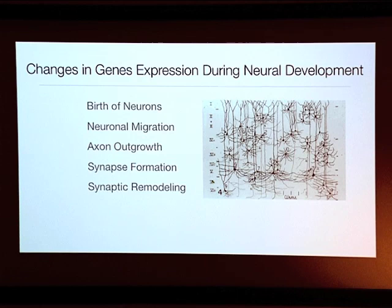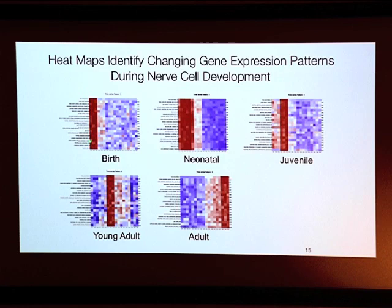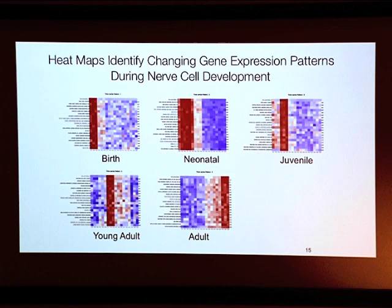I want to show you a heat map — 20,000 genes — where we can look at how all the genes are changing in an individual identified cell during development, from birth to the neonatal period, to the juvenile period, young adult, and adulthood. Genes at the highest levels are painted red. Early on during birth and the neonatal period, when we're generating cells and migration is ongoing, most genes are involved with growth, migration, and connections. Later on, other genes take hold involved with forming, refining, and strengthening connections between cells.